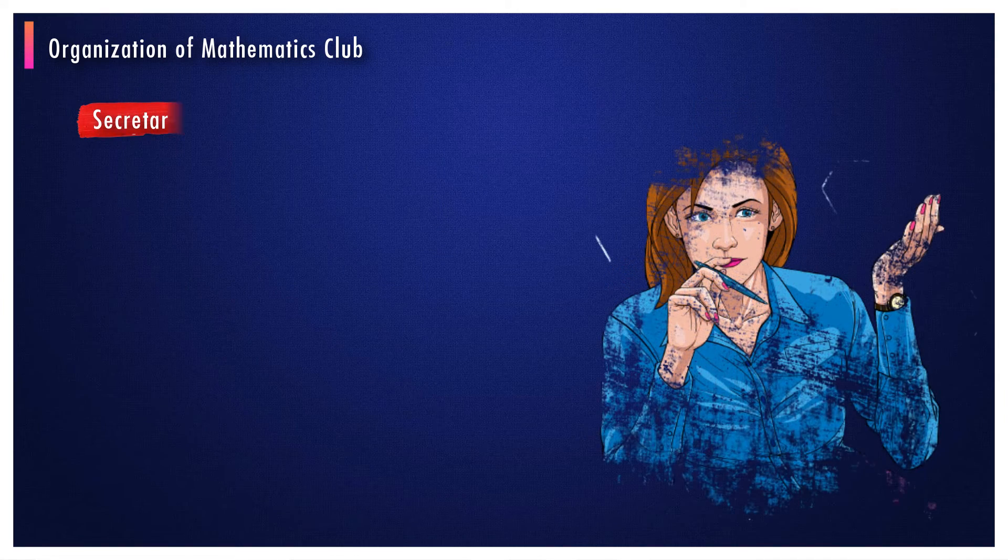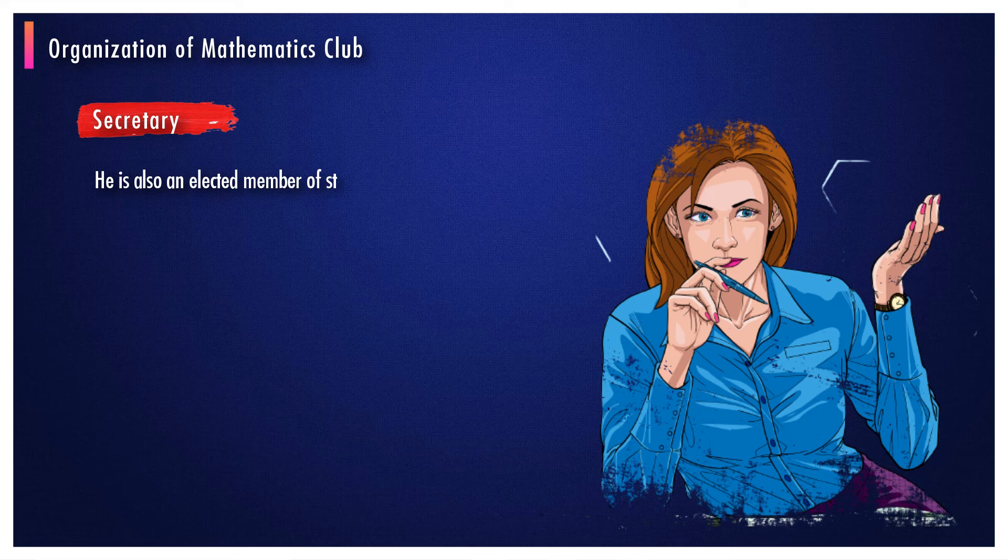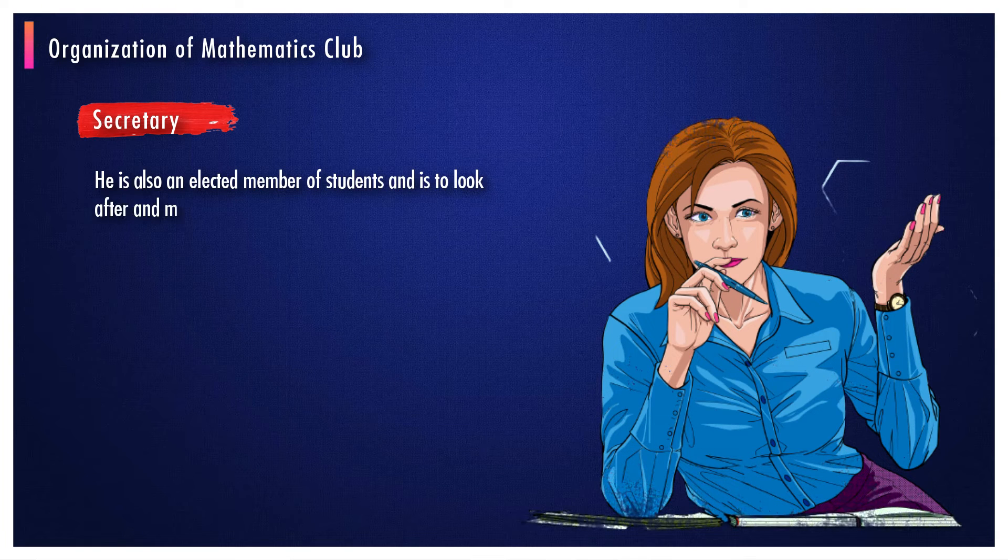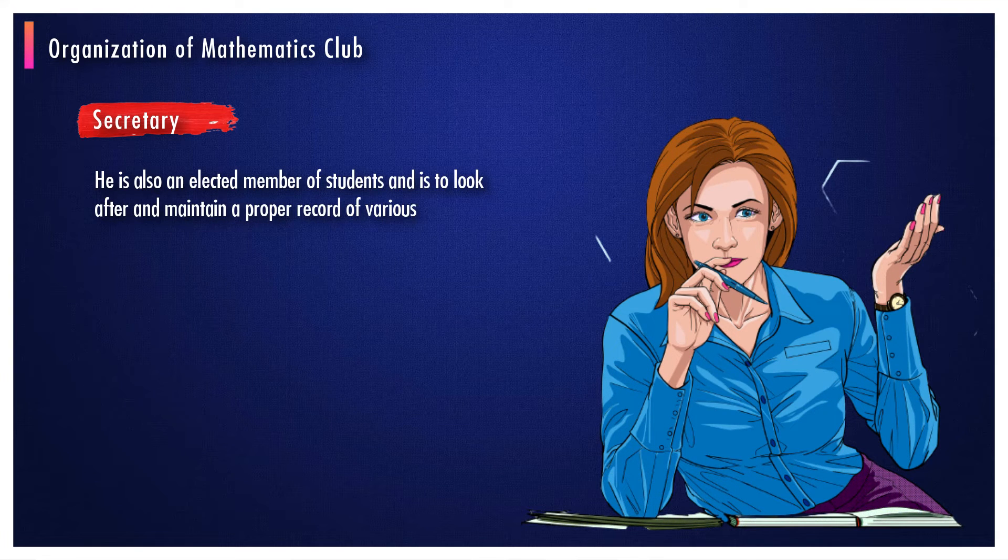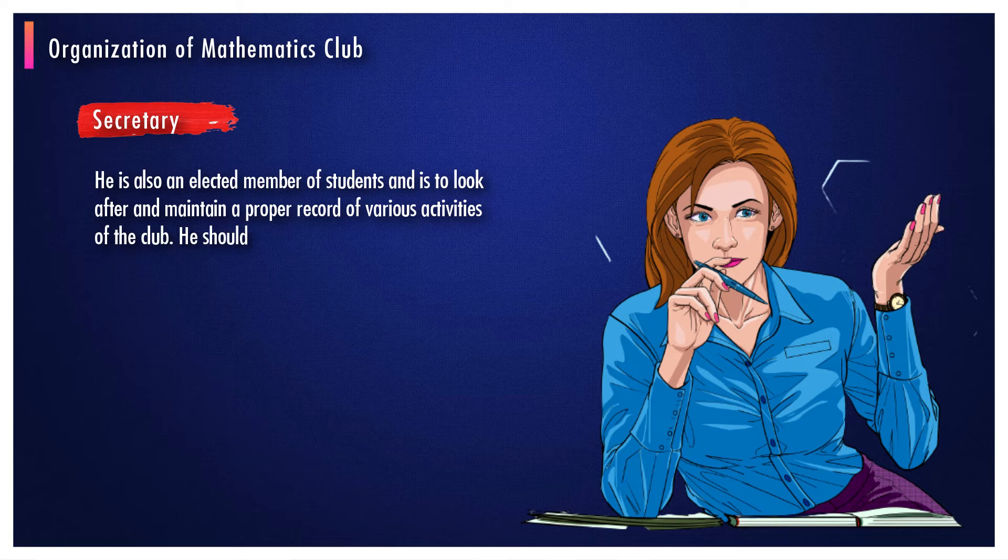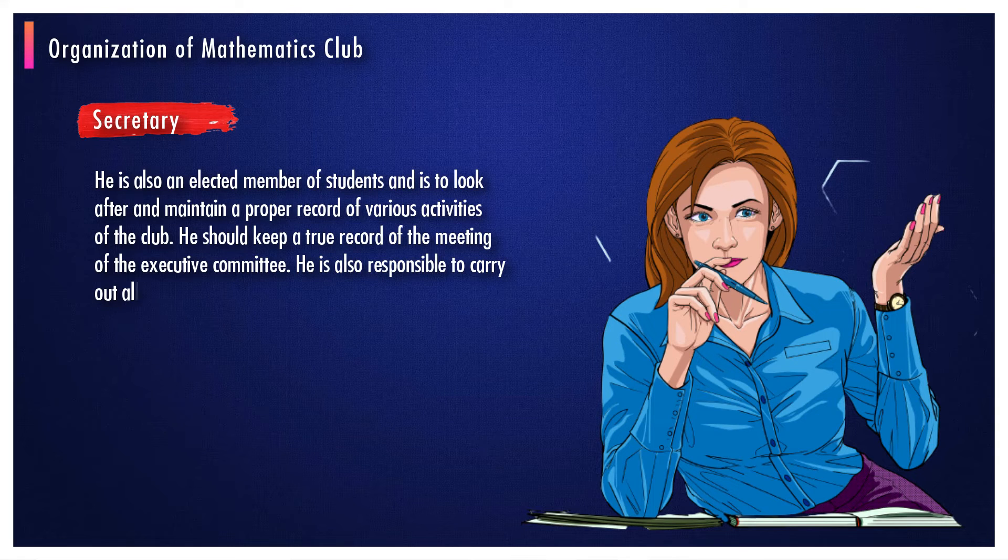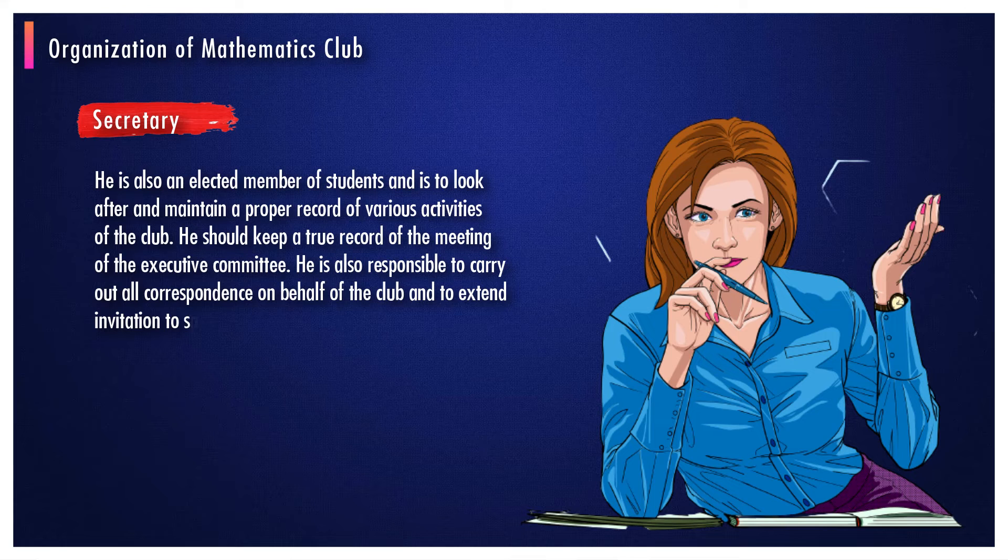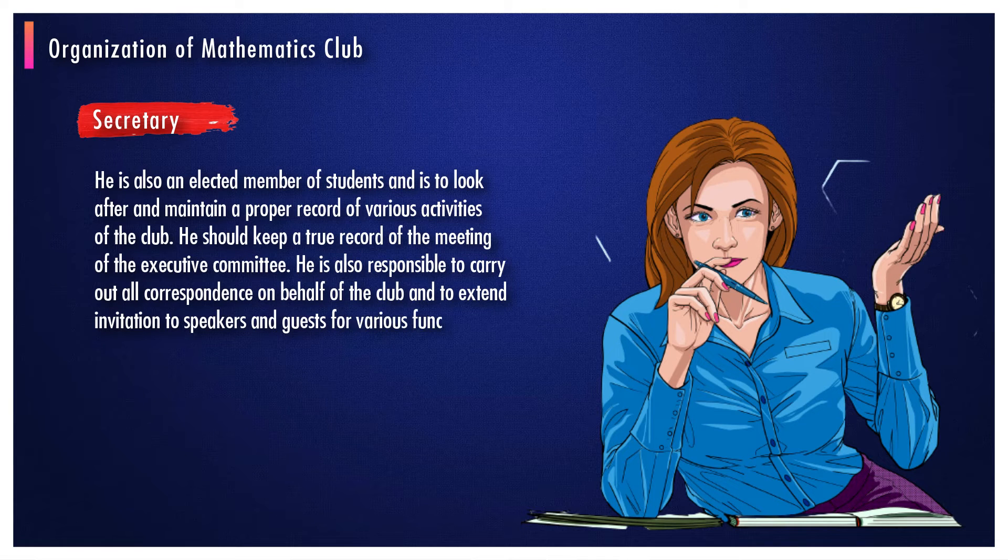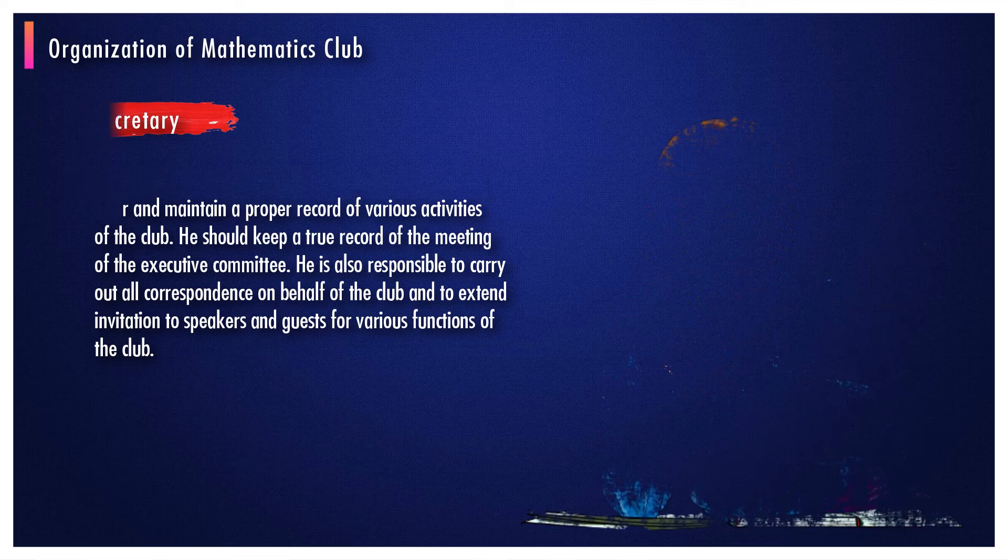The second one is secretary. He is also an elected member of students and is to look after and maintain a proper record of various activities of the club. He should keep a true record of the meeting of the executive committee. He is also responsible to carry out all correspondence on behalf of the club and to extend invitations to speakers and guests for various functions of the club.